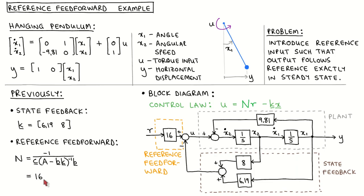Note that the state feedback determines the closed-loop poles which determines the transient response, whereas the reference feedforward determines the steady-state response. Adding the reference does not influence the closed-loop poles, which means that we can first design the state feedback without considering the reference and then add the reference. A block diagram of the linearized plant model with state feedback and reference feedforward is shown here on the right.